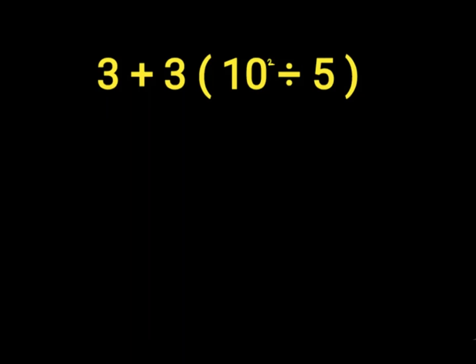3 plus 3 parenthesis 10 to the power of 2 divided by 5. First of all, solve our parenthesis, which is 10 to the power of 2 divided by 5. In our parenthesis we have an exponent: 10 to the power of 2 is 10 times 10, which gives us 100. Then we have 100 divided by 5. We bring down our 3 plus 3.